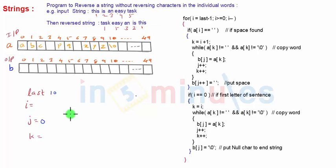Okay, so in the previous video we discussed the logic for reversing a given string without reversing the characters in the individual words - that is, just reversing the order of the words. Here we'll take 'a' as an input array in which we'll input the string, and 'b' as a resultant array, assuming both arrays are of size 50.